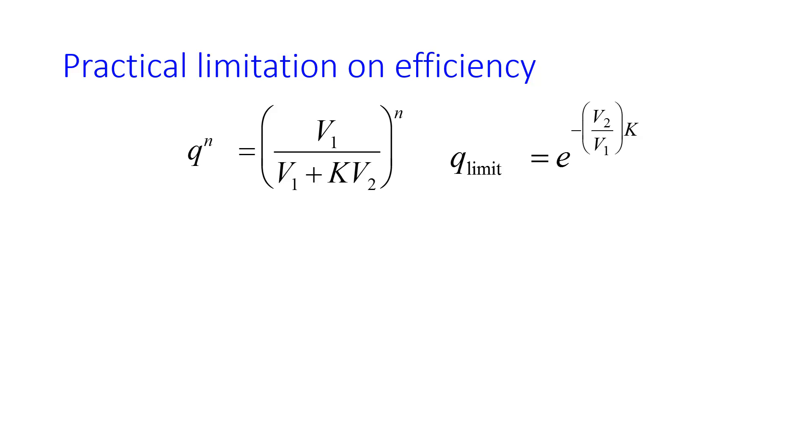In practice, there's a practical limit given by the equation there, and if you plot both of these equations, you get two lines. The blue line on the bottom is what happens if you do a large number of extractions without taking a practical limitation into account. The actual limitation gives you the orange line.